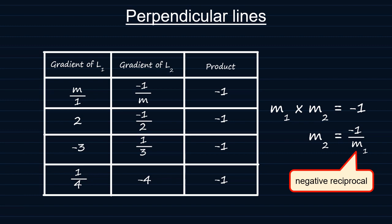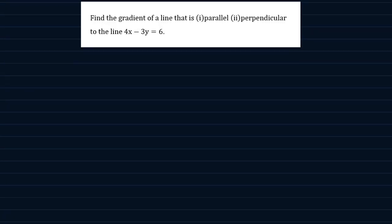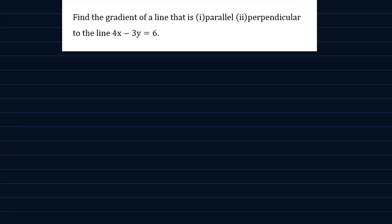We have an example here. It says, find the gradient of a line that is (i) parallel and (ii) perpendicular to the line 4x minus 3y is equal to 6.